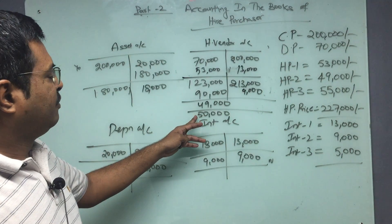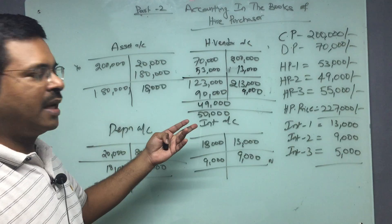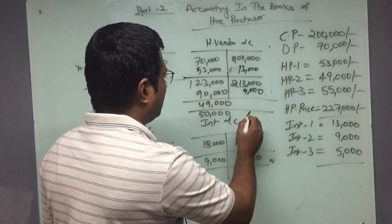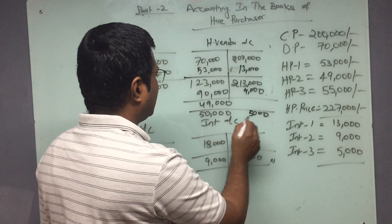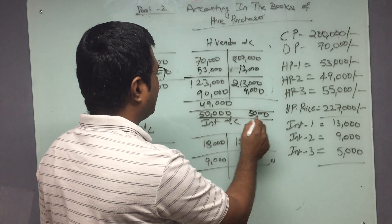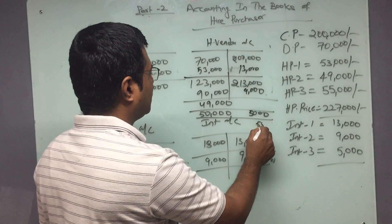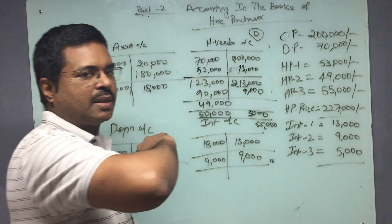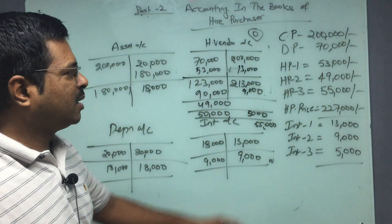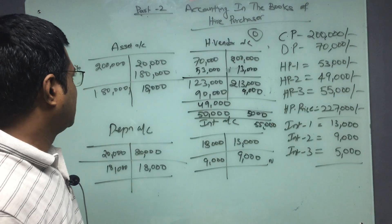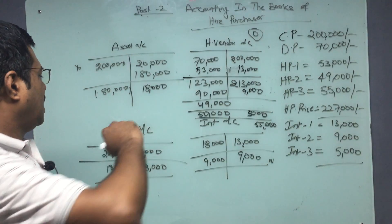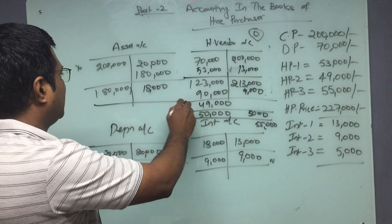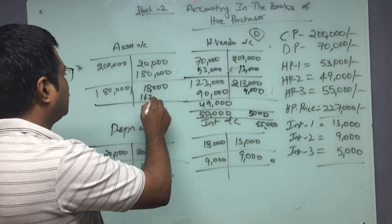At the beginning of the third year, 50,000 at 10 percent — I will again create an interest liability of 5,000. At the end of the third year, I will pay 55,000 to the vendor and the vendor account will become zero after all payments are made. Coming to the asset account, I will create depreciation of 18,000 for the second year, leaving a balance of 1,62,000.